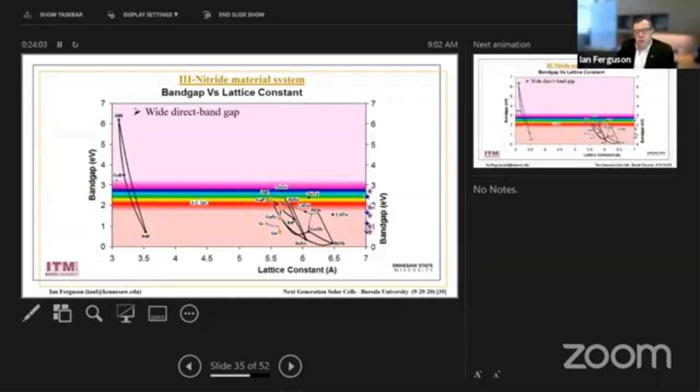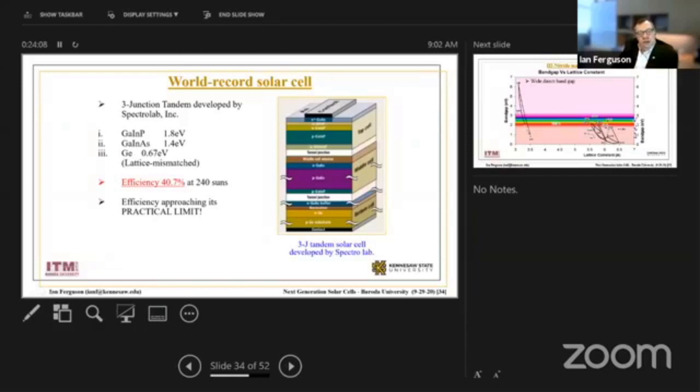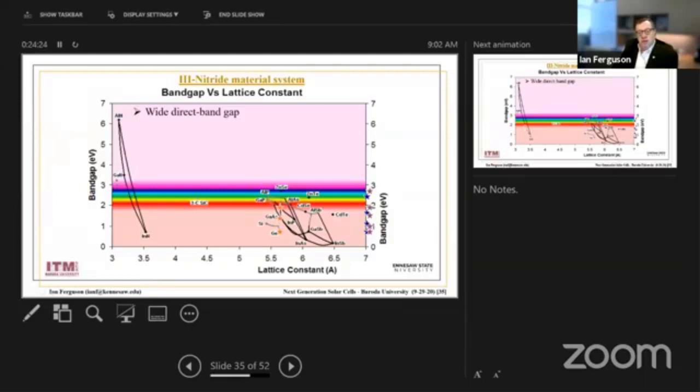So if you look at this previous device in here, you have gallium indium phosphide for this wide bandgap material, so obviously if you go from the top where you're absorbing light, you go from wider to medium to smaller bandgaps, so you take out the light as you're going through.